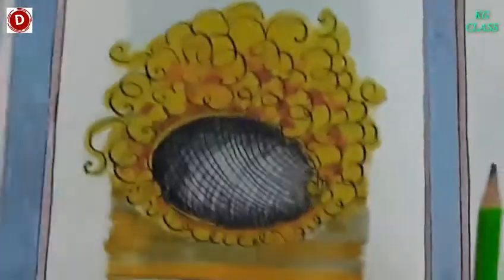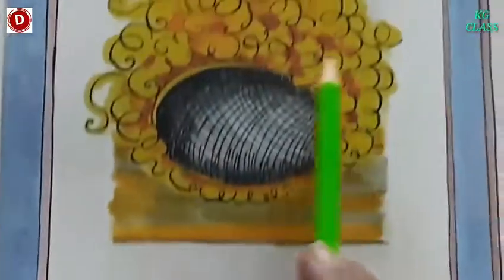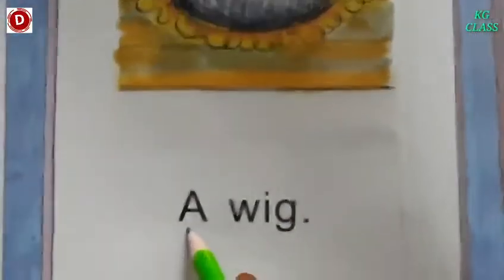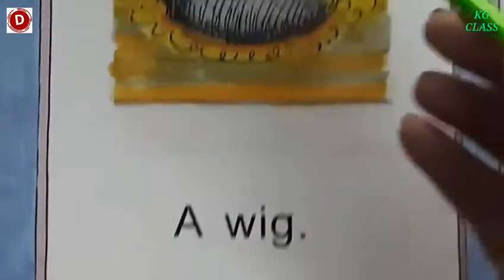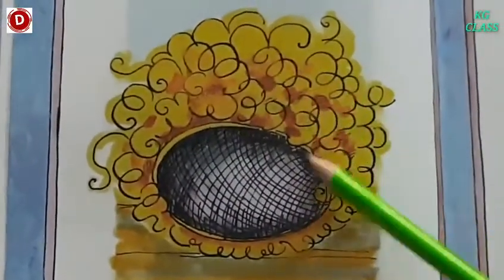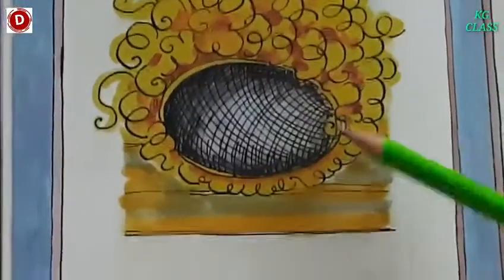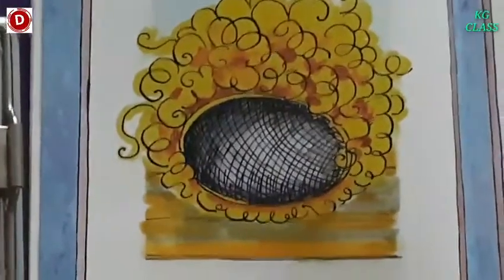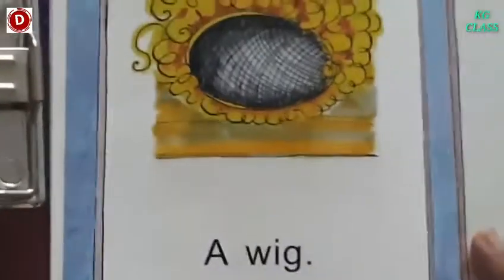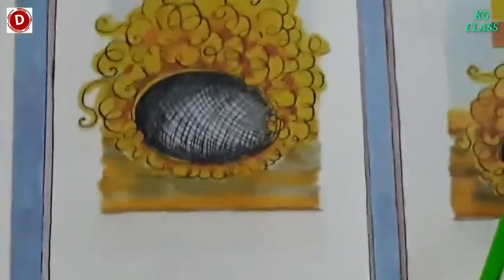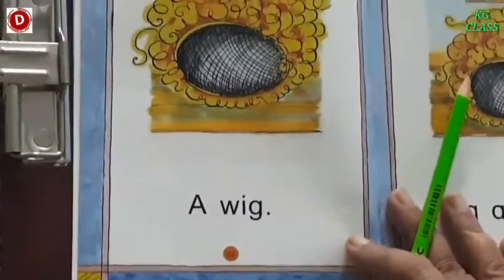Again turn the page. Children, now see — this is page number 22. Look at this picture. This is a v-ig, wig. Wig means nakli baal — artificial hair. People wear it on their head when they don't have hair. So this is a wig. Children, today you have to read the story A Big Pig from page number 17 to 22. Read it the way I taught you.